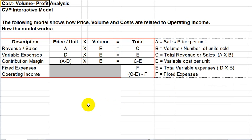Let's take a look at how the model works. The model is based on the contribution income statement format, so we have our revenue and sales with variable expenses being subtracted from them to get you a contribution margin, and then if we further subtract fixed expenses that would be operating income.